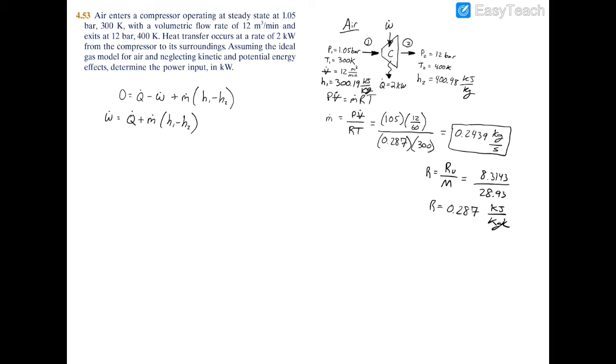So now we pretty much have everything we need to find this power into the compressor. We have that heat transfer, the mass flow rate, and our inlet and exit enthalpies. Let's fill that into our equation. Your input power is going to equal the heat transfer, which is negative 2 kilowatts. The reason is that it's releasing from the compressor, it's out of the system. So by sign convention, if it leaves the compressor, it's a negative number.